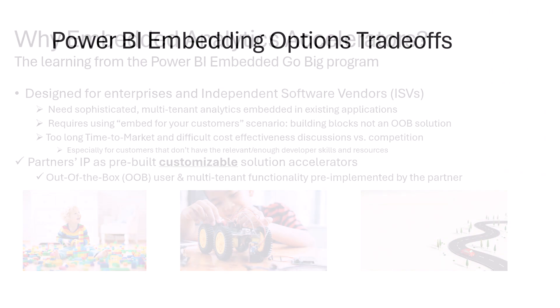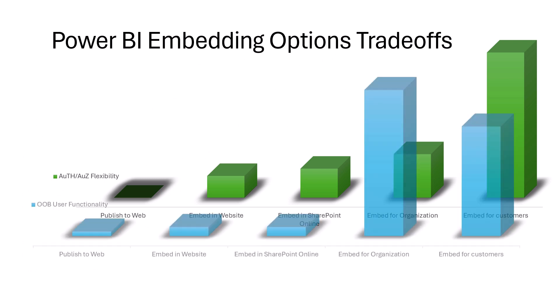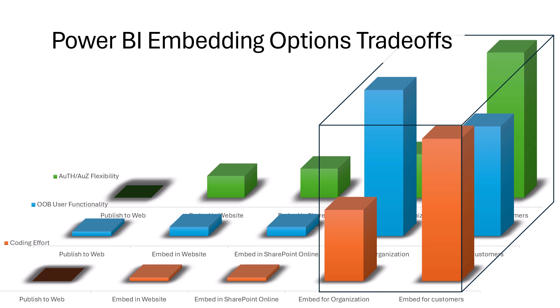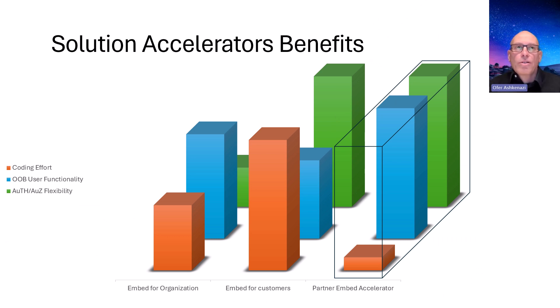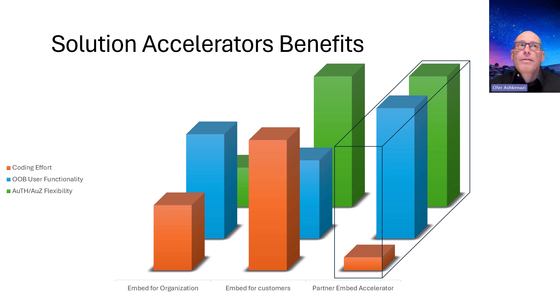There are trade-offs not just in authentication and authorization, but also in terms of publishing, functionality across the different scenarios, and the cost of actual implementation — the coding effort. When we introduce the accelerators, we focus on just the right-hand side, because the left-hand side isn't enough for ISV implementations. Focusing on these three offerings, the one on the right relies on partner IP to bring the same kind of flexibility as embed for customers, but with better functionality — actually even better than what you get with embed for organization.